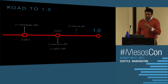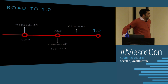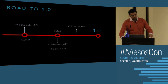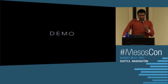So when is 1.0 coming out? In release 0.24.0, we introduced the v1 scheduler API. In the next release, we plan to wrap up the executor API and the admin API. Somewhere between that and 1.0, we may also complete the internal API. So a couple of releases from now, you should expect a Mesos 1.0 release. I'll now hand it over to Isabel, who will demo how to play with the new HTTP API.